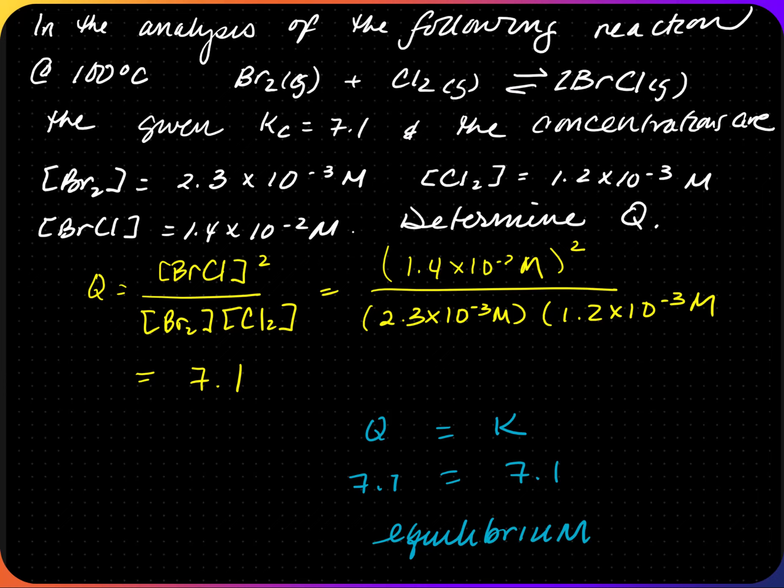You solve for Q to determine which way an equation will shift to establish equilibrium. Two clues that you are solving for reaction quotient: it will ask you to determine the shift, and concentrations for all products and reactants are provided. Write Q as products over reactants, plug in values, then compare Q and K. If Q > K, shift towards reactants. If Q = K, at equilibrium. If Q < K, shift to products. Q problems will never have an ICE table.